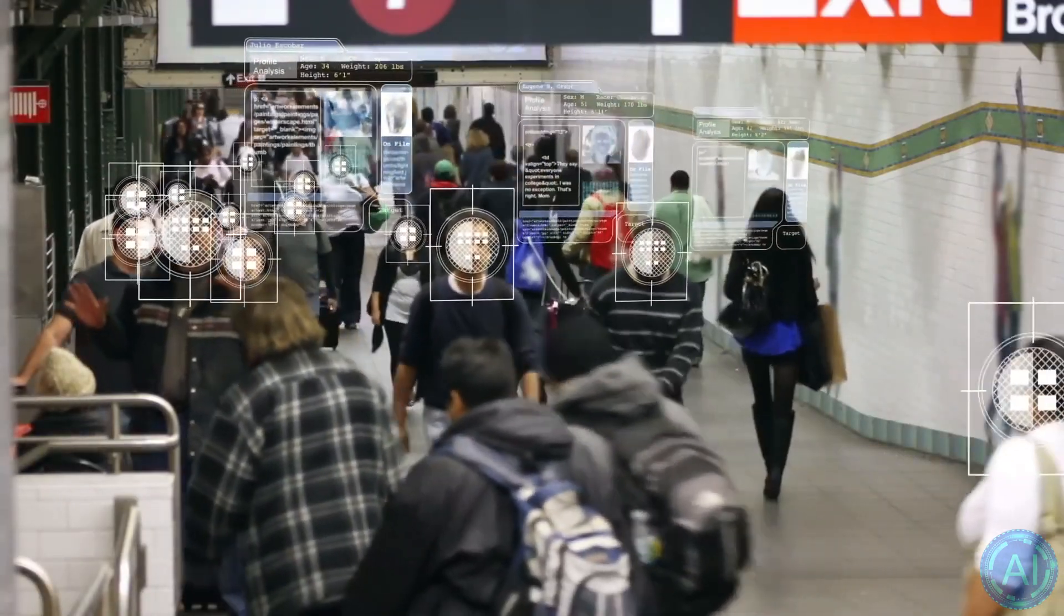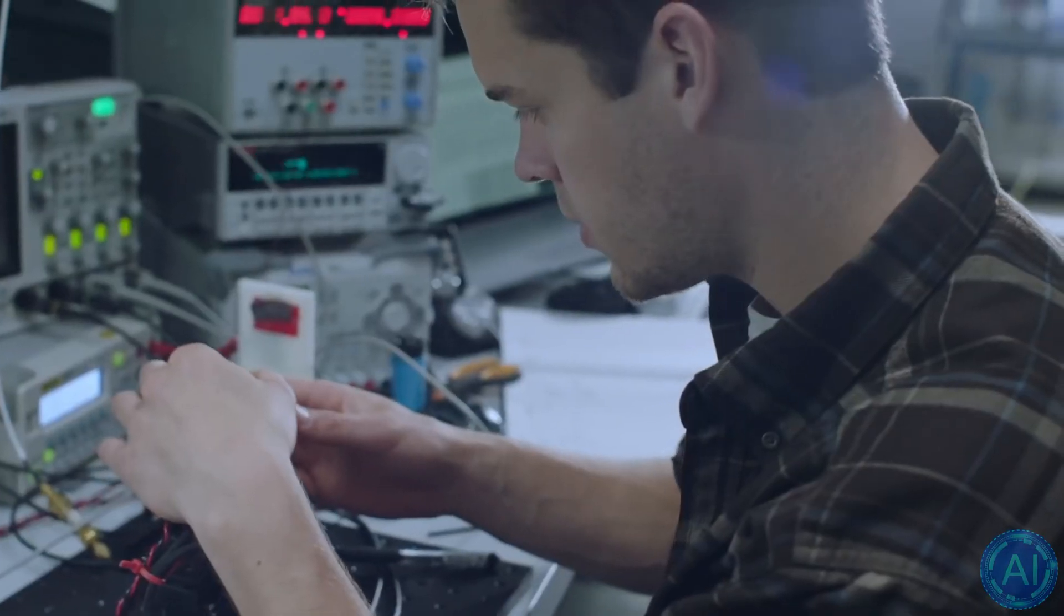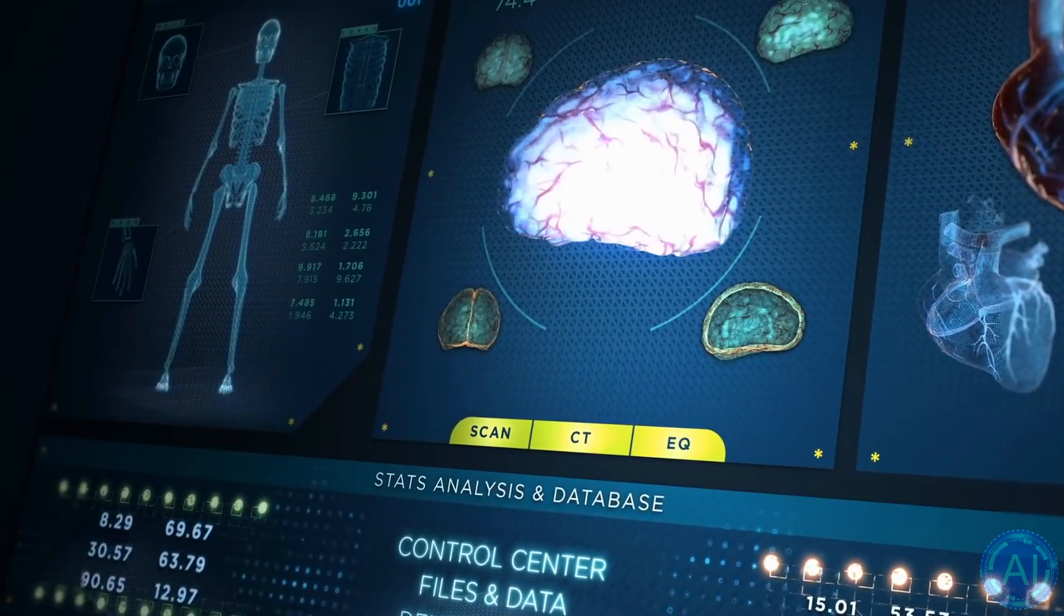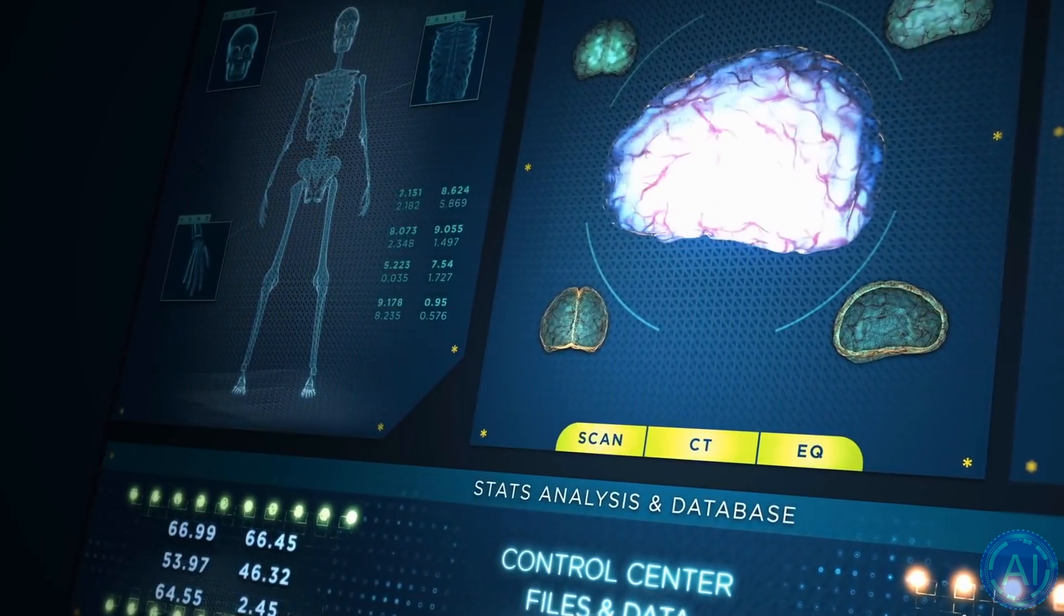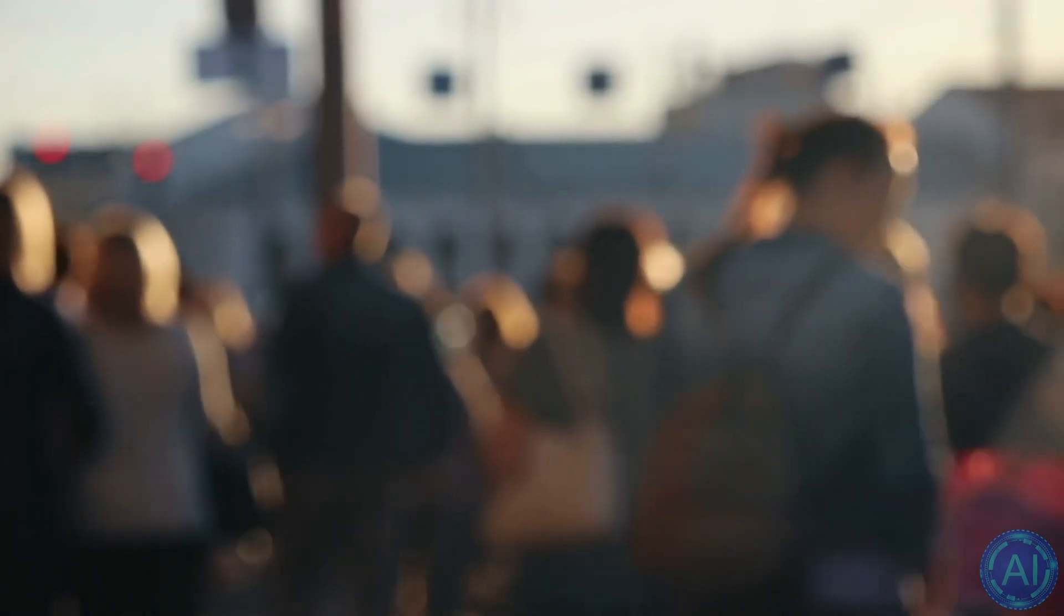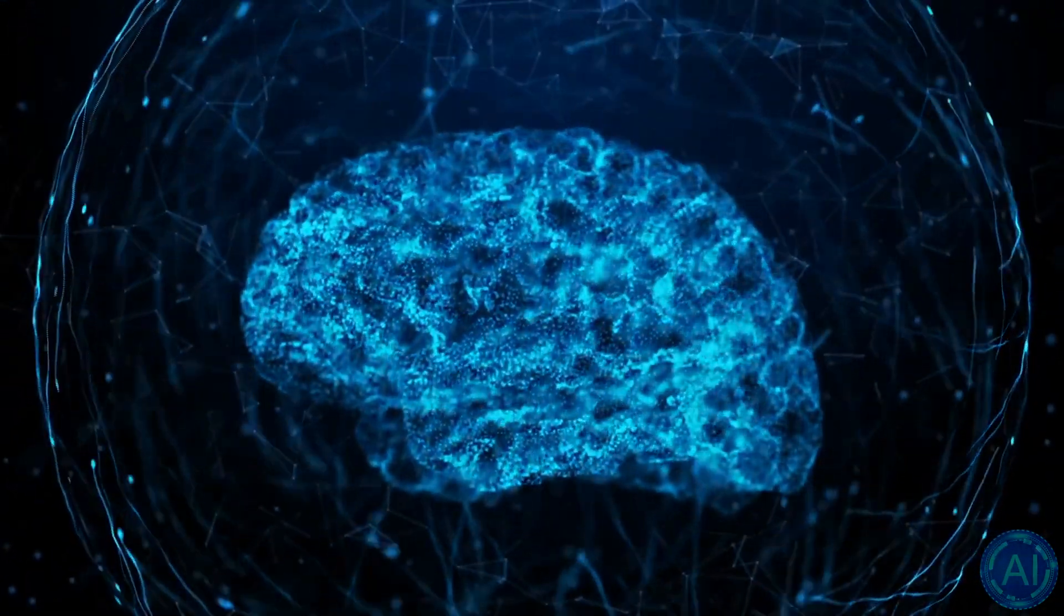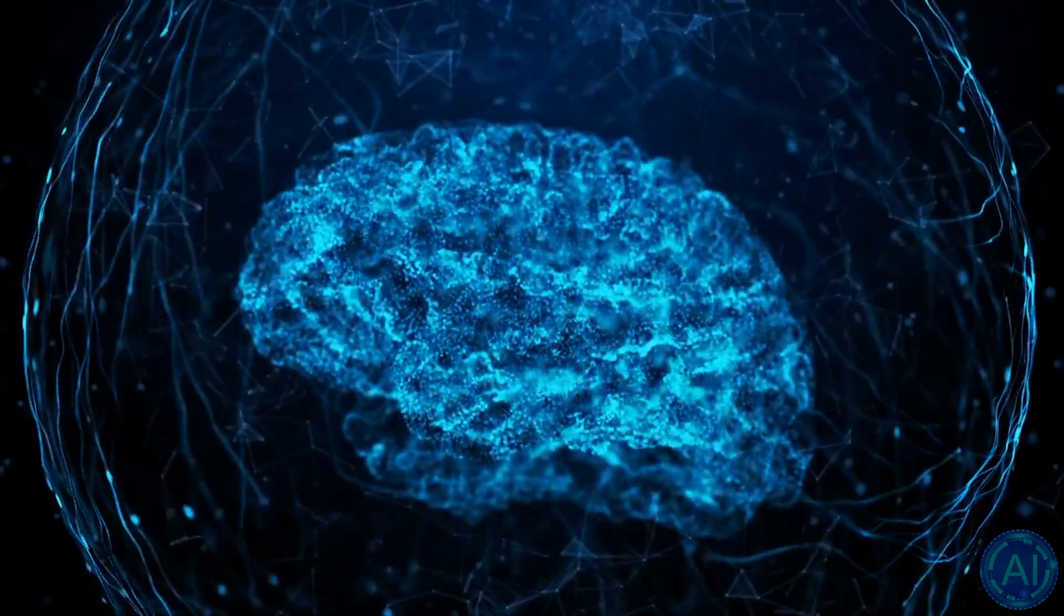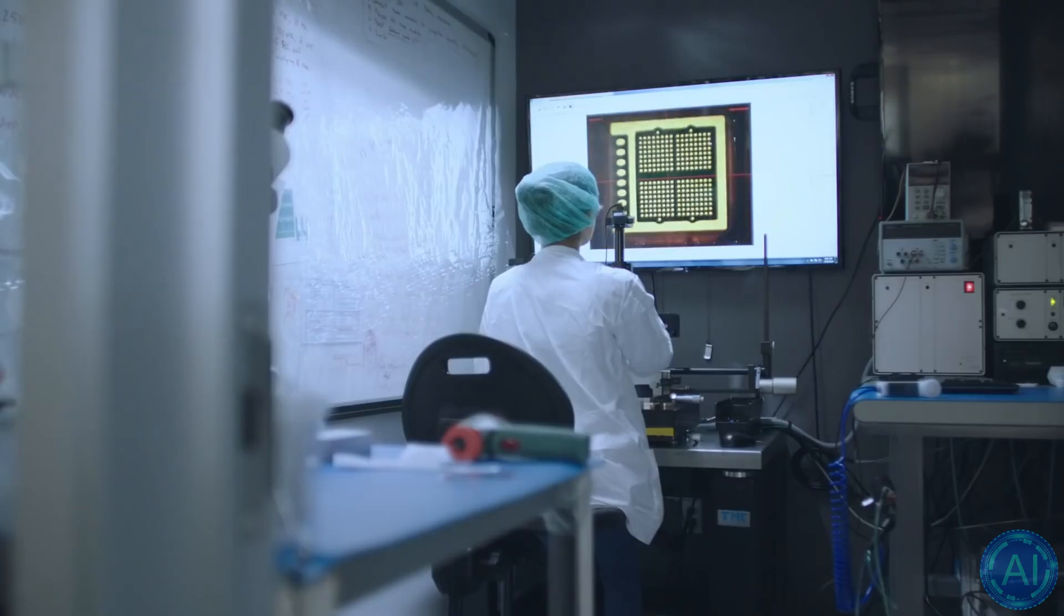To create the map, the researchers cut donor tissue into 5,330-nanometer-thick pieces and scanned them with a scanning electron microscope at a resolution of 4 nanometers. The 225 million pictures that resulted were computationally aligned and stitched together to provide a 3D digital depiction of the region. Humans checked the work of machine learning algorithms that segmented cells and categorized synapses, axons, dendrites, cells, and other structures.